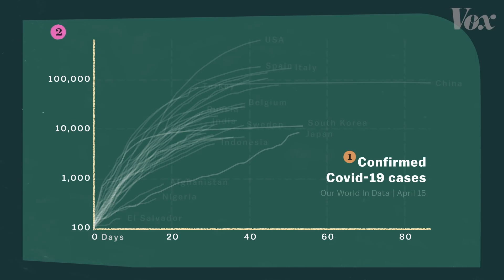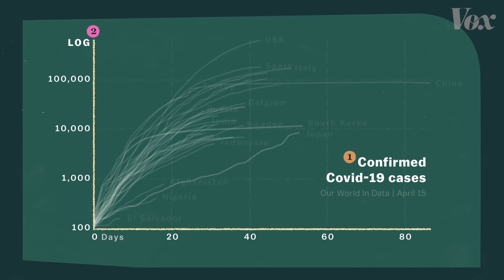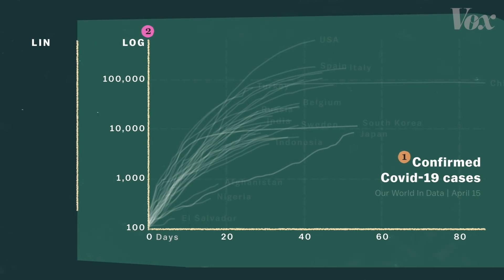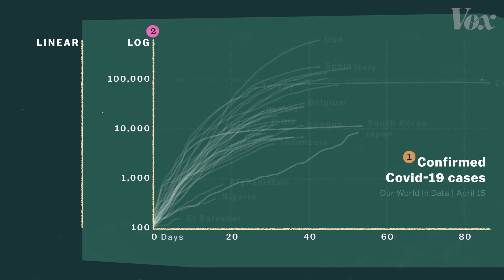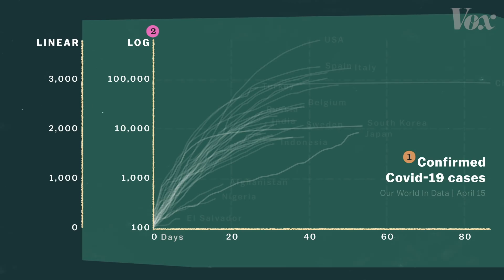The second thing to know is that the scale for the y-axis on this chart is a bit different from most charts. It's called a logarithmic or log scale. On a typical linear scale, you divide the space by adding the same value over and over. The log scale is made by multiplying a value — in this case 10. 100 times 10 is 1,000, times 10 is 10,000, times 10 is 100,000.